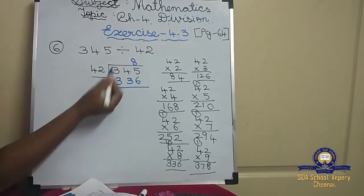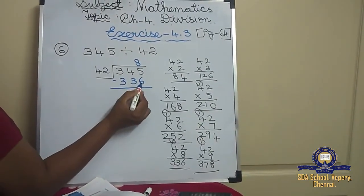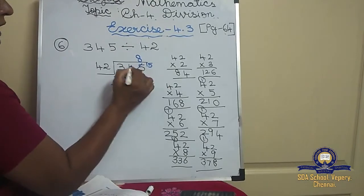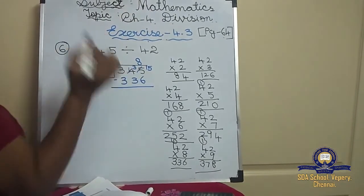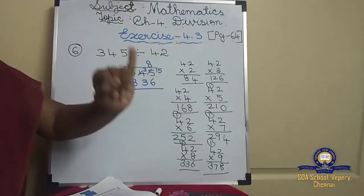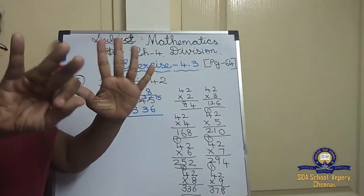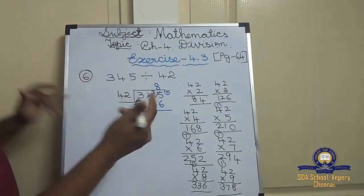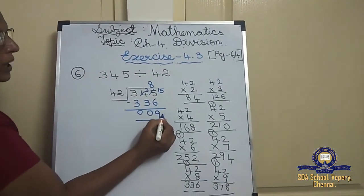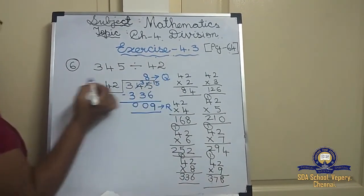Now subtract 345 minus 336. Can you count after 6 up to 5? No, so borrow: 5 becomes 15 and 4 becomes 3. After 6, count up to 15: 7, 8, 9, 10, 11, 12, 13, 14, 15 — that's 9. 3 minus 3 is 0, 3 minus 3 is 0. So the remainder is 9 and the quotient is 8.